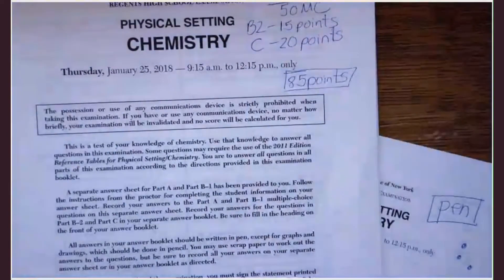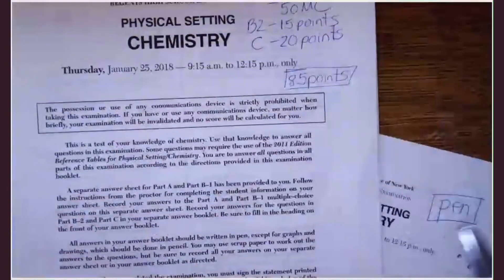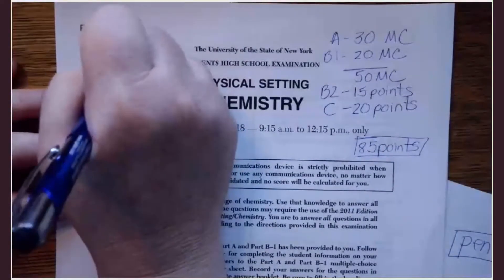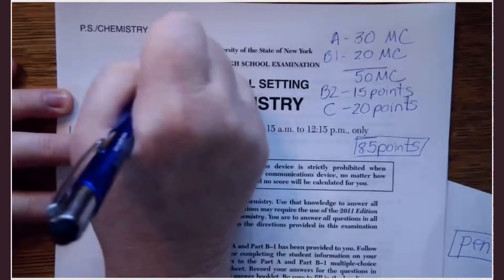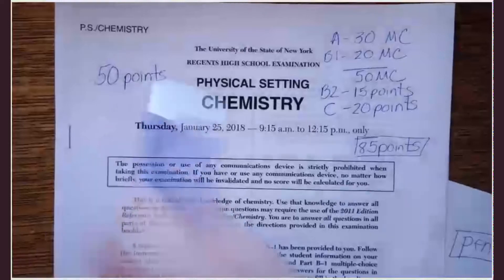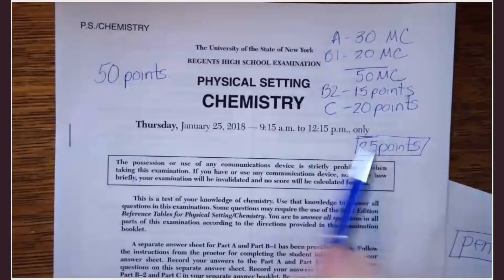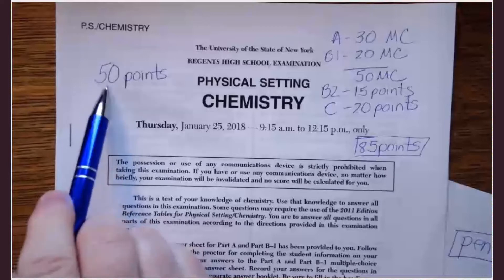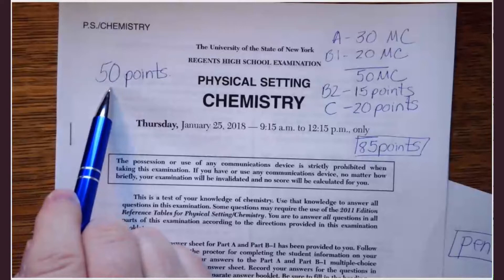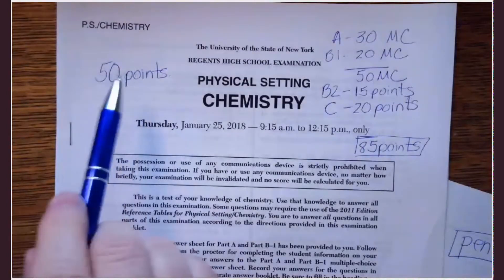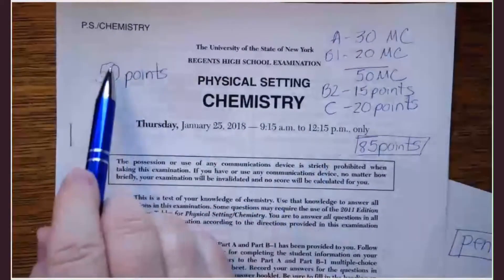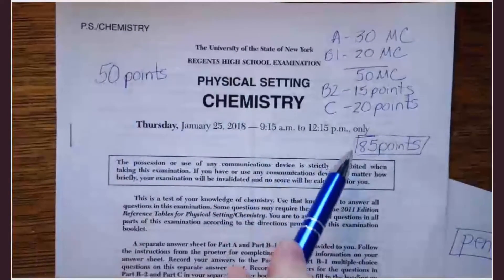In general, most Regents chemistry exams, you are going to need around 50 points. Now it might be 51, might be 52, but you're going to need around 50 of these 85 points in order to pass the exam with a 65%. Now I wouldn't shoot for getting 50 points because the scale might be a little bit higher. You never know.